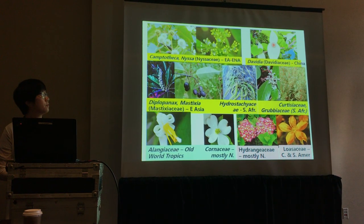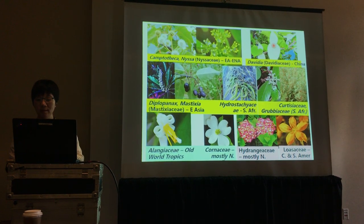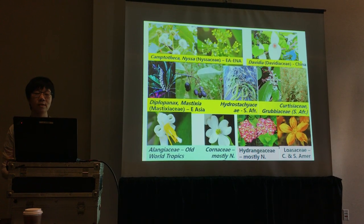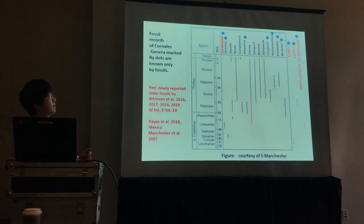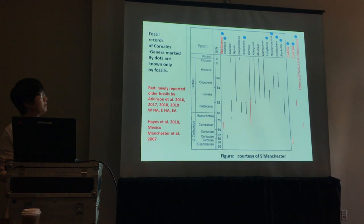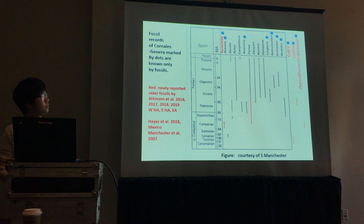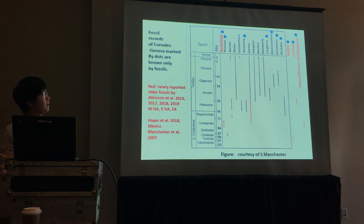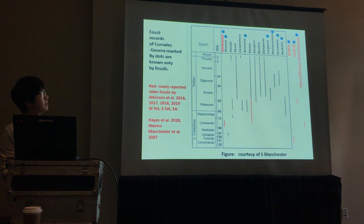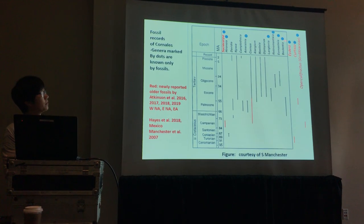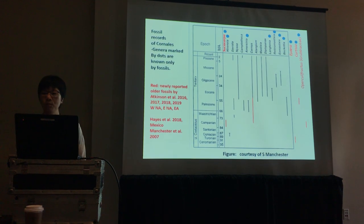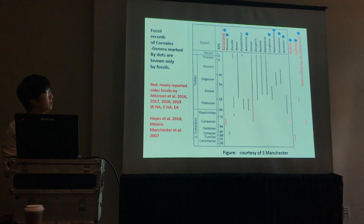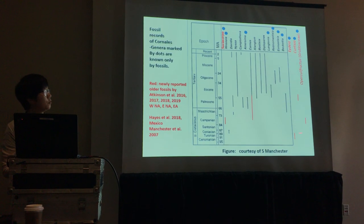However, most of these families that are presently restricted in geographic distribution have fossils occurring outside of their present distribution. This is the summary of the fossil information of Cornales, which may not be complete. Many of these families are actually known only by fossils, as indicated by the blue dots, and several new fossils have been reported recently, dated back to the late Cretaceous.